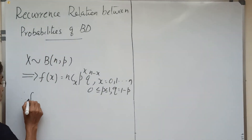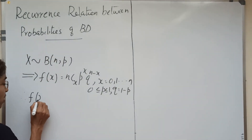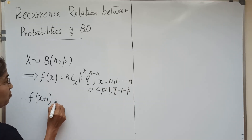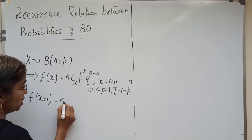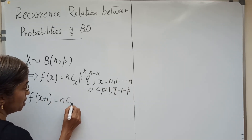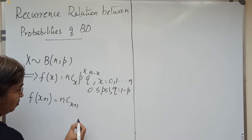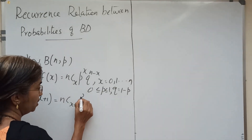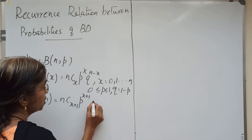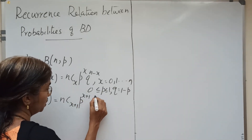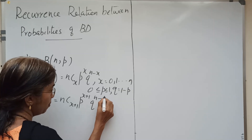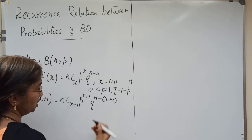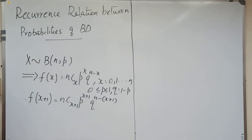Therefore, we can write f of x plus 1, which is n-C-(x plus 1), p raised to x plus 1, q raised to n minus (x plus 1).